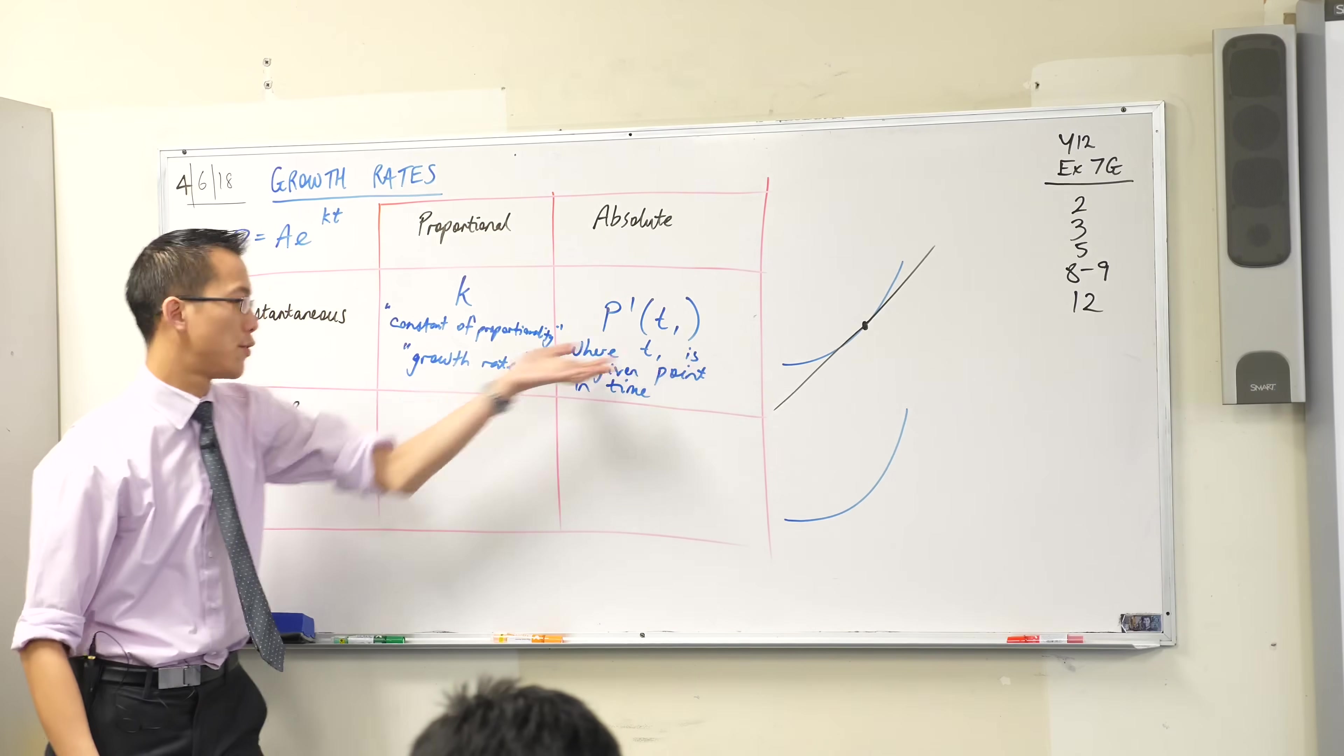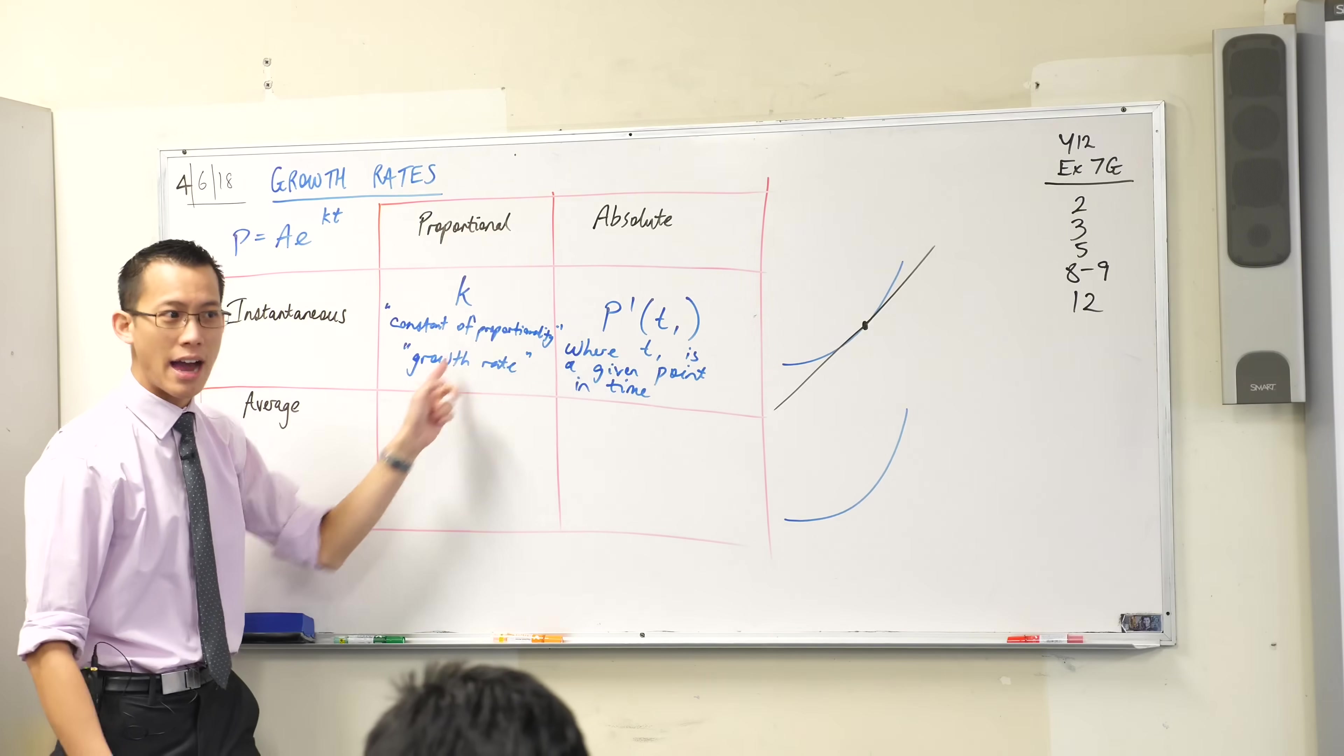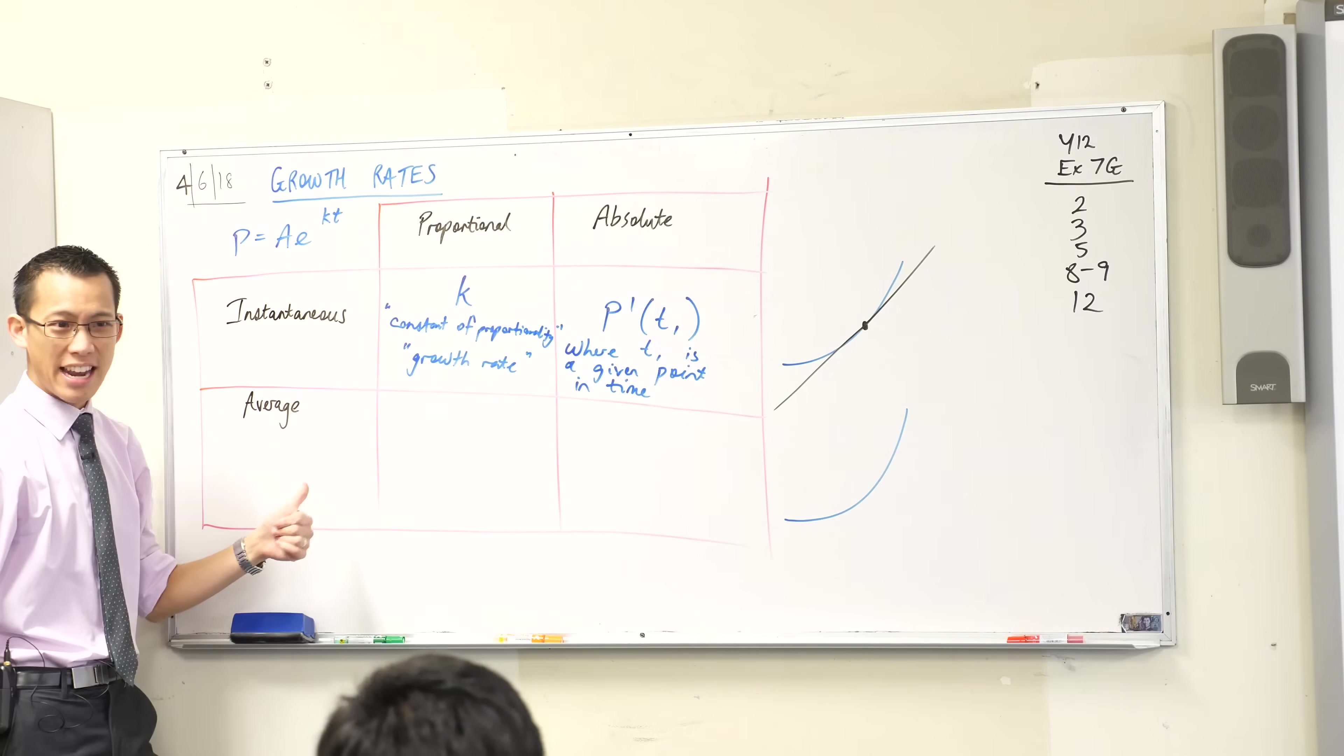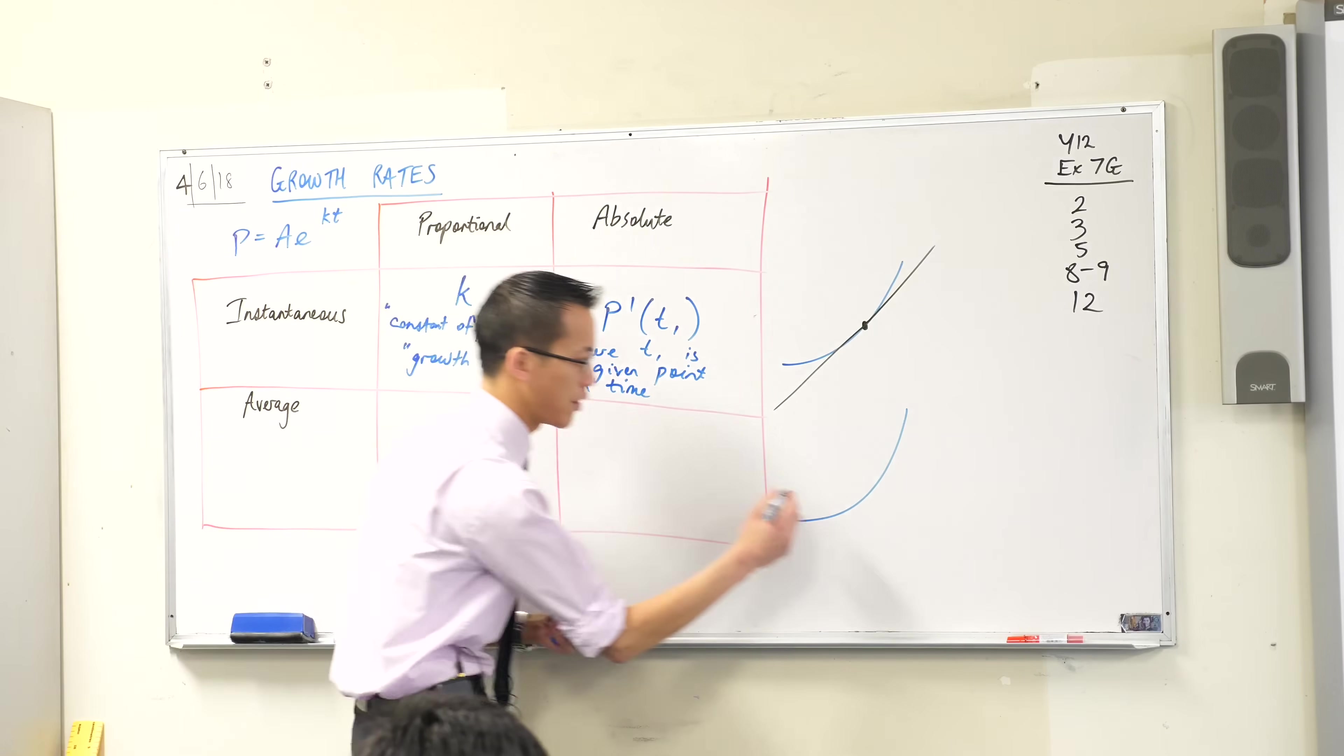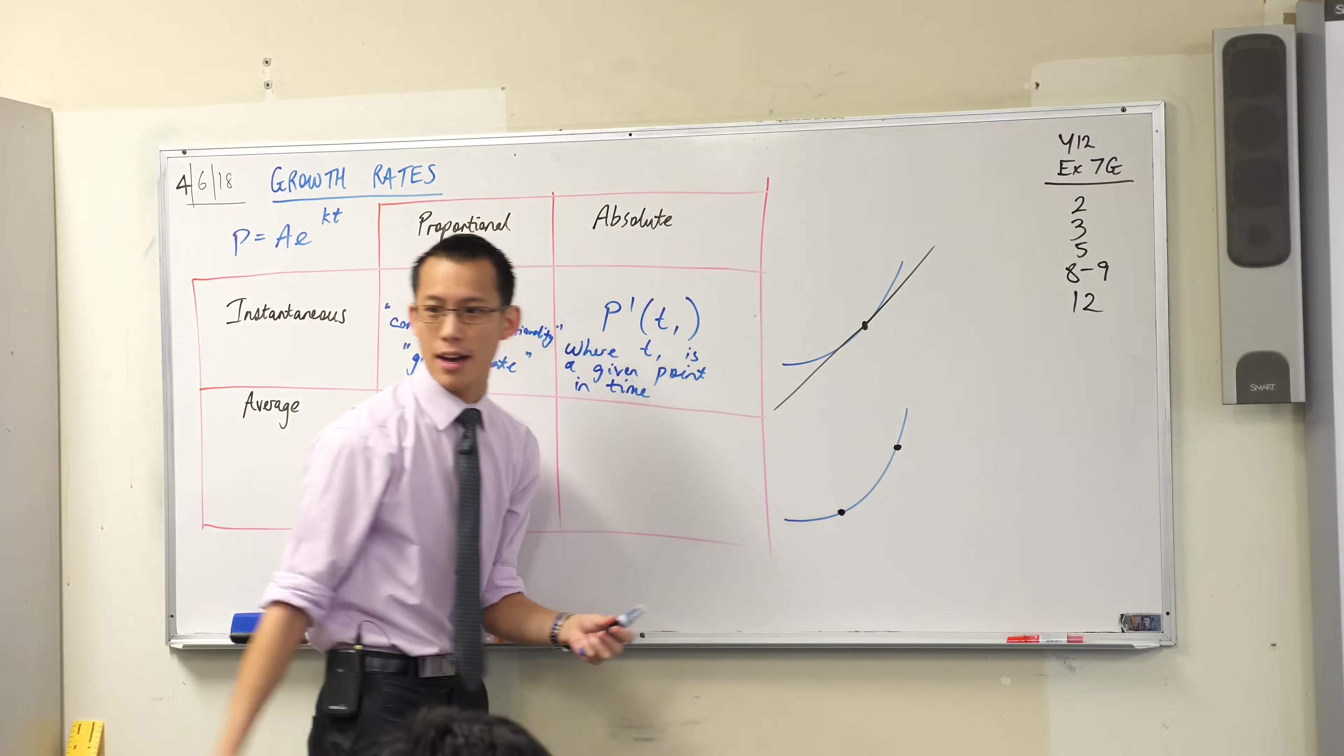You have no derivative, you've got no equations, you can't find out either of these things. But you can actually take some measurements over time and compare, for example, this time to that time.